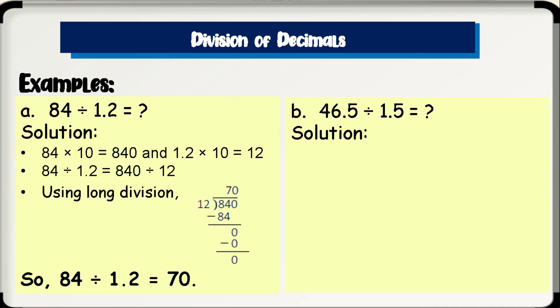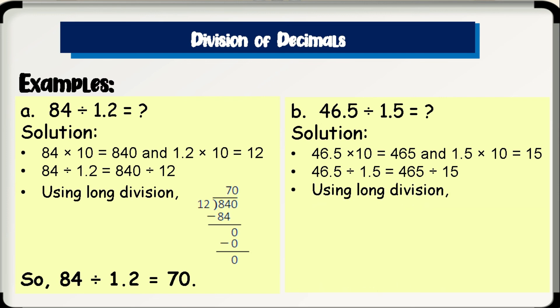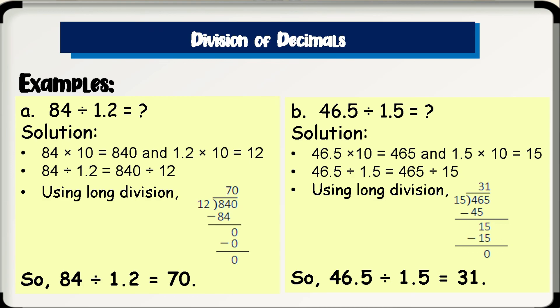Letter B: 46.5 divided by 1.5. Solution: since the divisor has 1 decimal place, multiply both the dividend and the divisor by 10. So 46.5 times 10 is 465 and 1.5 times 10 is 15. Thus, 46.5 divided by 1.5 is equal to 465 divided by 15. Using long division, we get 31 as the quotient. So 46.5 divided by 1.5 is equal to 31.